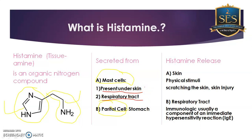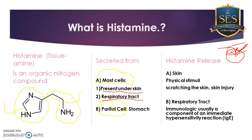To demonstrate the location of mast cells in the skin: if you scratch your body, you are providing a physical stimulus. When you scratch the skin, the mast cells located under the skin get activated and release histamine. This histamine then causes vasodilation and inflammation simultaneously, increasing blood flow to that site.